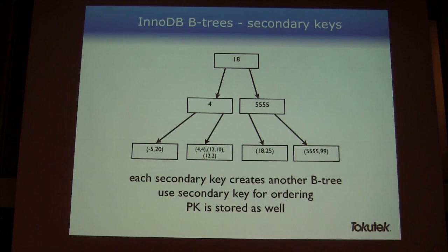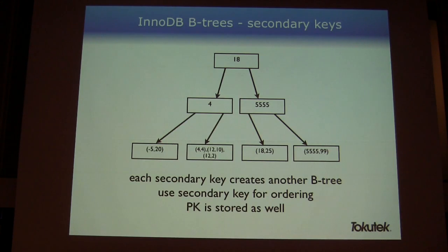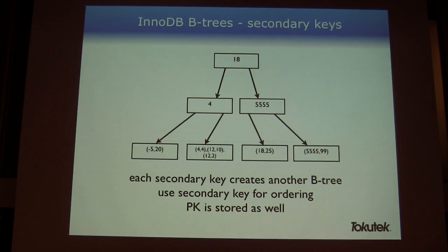What InnoDB does for secondary keys is use the secondary key for ordering and lookups, but the payload stored with it is just the primary key. So in the leftmost node, a value like negative 5 comma 20 means a B-value of negative 5 with a primary key of 20. This makes lookups using the secondary index challenging, because the secondary index only provides primary keys, and then you have to go look up those primary key values — things can get inefficient quickly.